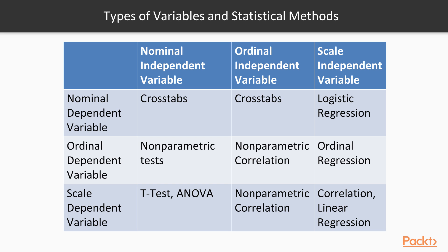How do level of measurement and independent and dependent variables come together? Level of measurement of a variable is important because it determines the appropriate summary statistics, tables, and graphs that can describe the data. Statistics are available for variables at all levels of measurement, and in practice the choice of statistical method depends on the questions you are asking and the nature of the measurements. This table suggests which statistical techniques are most appropriate based on the measurement level of both your independent and dependent variables. There are many additional types of techniques — these are just some of the more common ones we'll cover in this chapter.